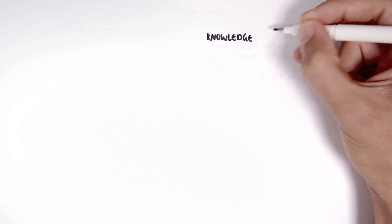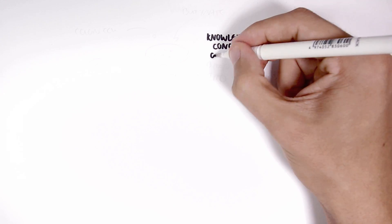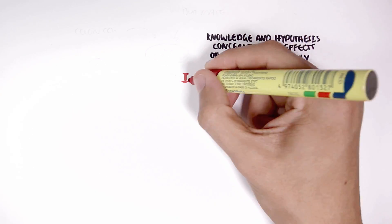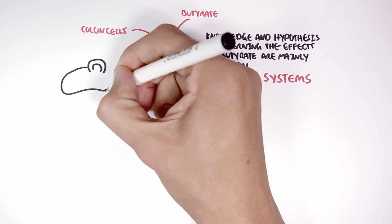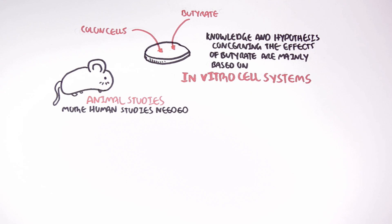It should be pointed out however that the knowledge and hypothesis concerning the effects of butyrate are mainly based on in vitro cell systems and animal studies. More human studies are needed to support some of these findings. In this video we will explore and discuss the effects of butyrate on colon health based on current literature.